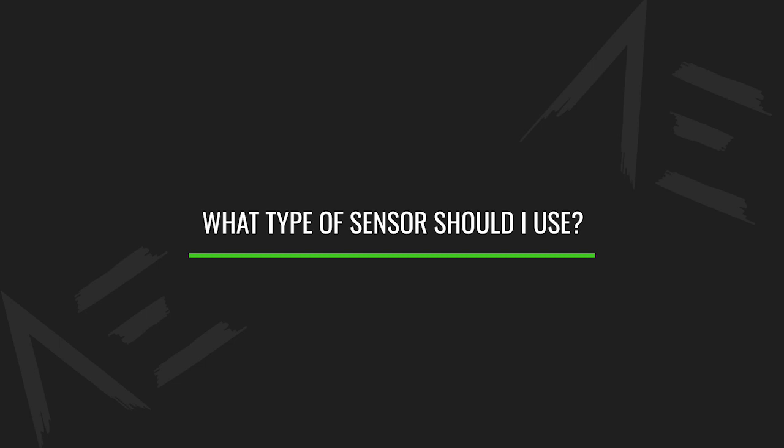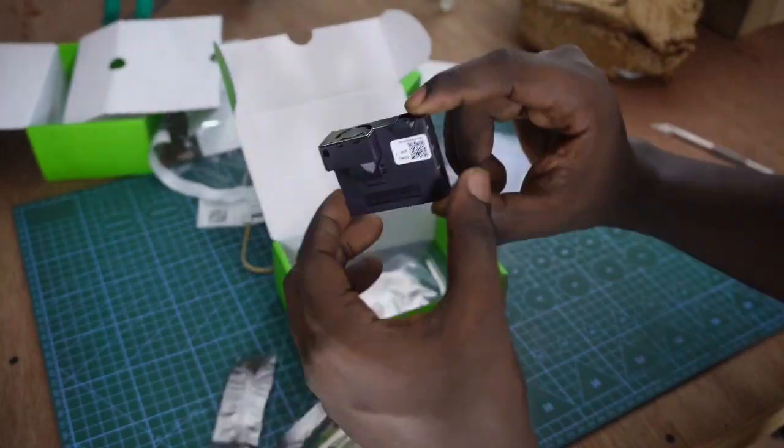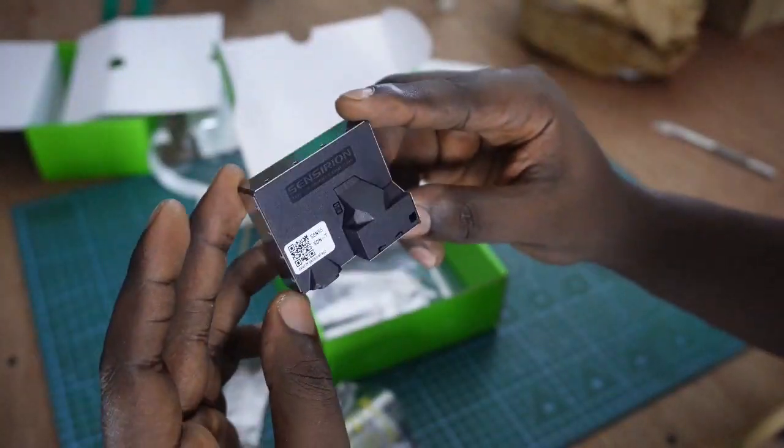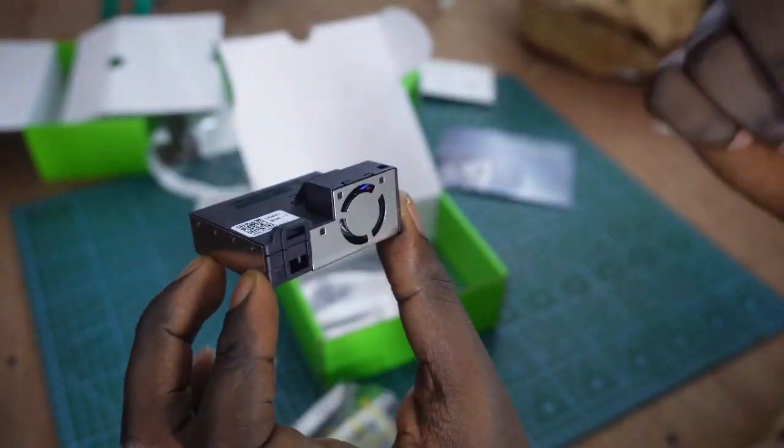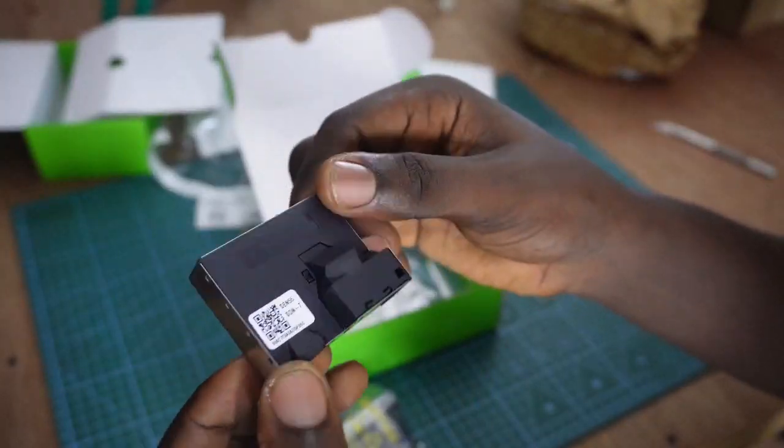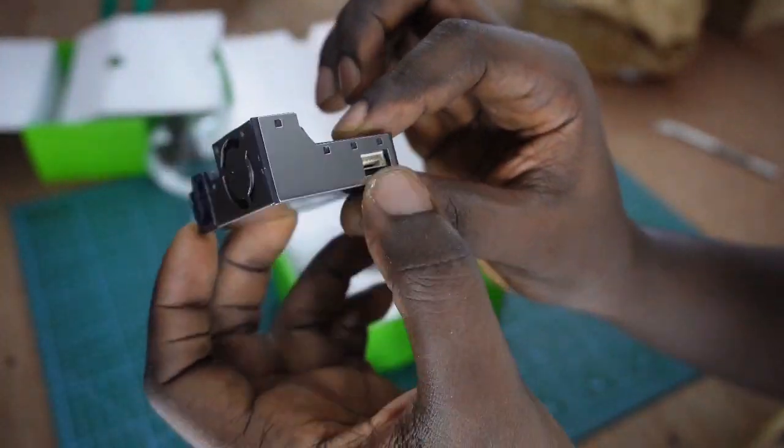The other decision I've had to make is on what type of sensor to use. For the first three pollutants I mentioned — PM, VOC, and NOx — the SCN55 sensor from Sensirion basically made this decision for me, just by how portable and convenient it is.